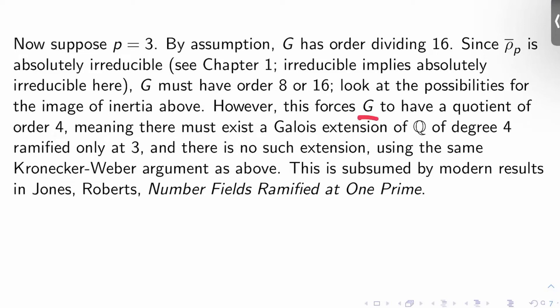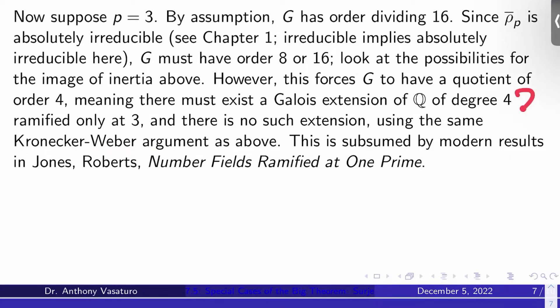So this forces G to have a quotient of order 4. Translate to Galois theory: this means we have a Galois extension of Q of degree 4, ramified only at 3. Again, this representation is only ramified at 3. But again, there's no extension, and the argument is the same as the Kronecker-Weber argument I gave in the P equals 2 case. So this case, P equals 3, is only very slightly harder than the P equals 2 case. And actually, this last result here is subsumed again by modern results in Jones-Roberts number fields ramified at 1 prime.